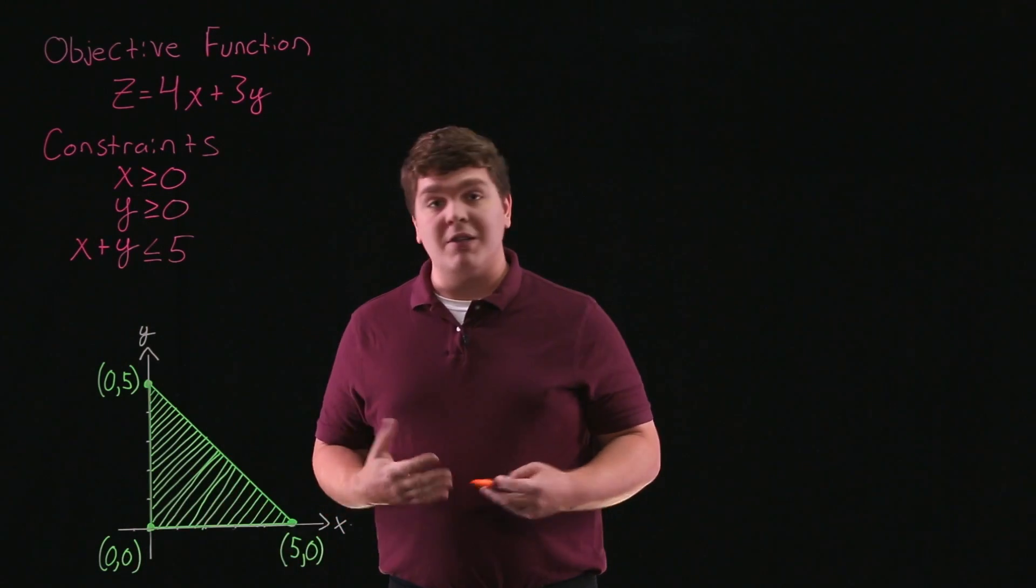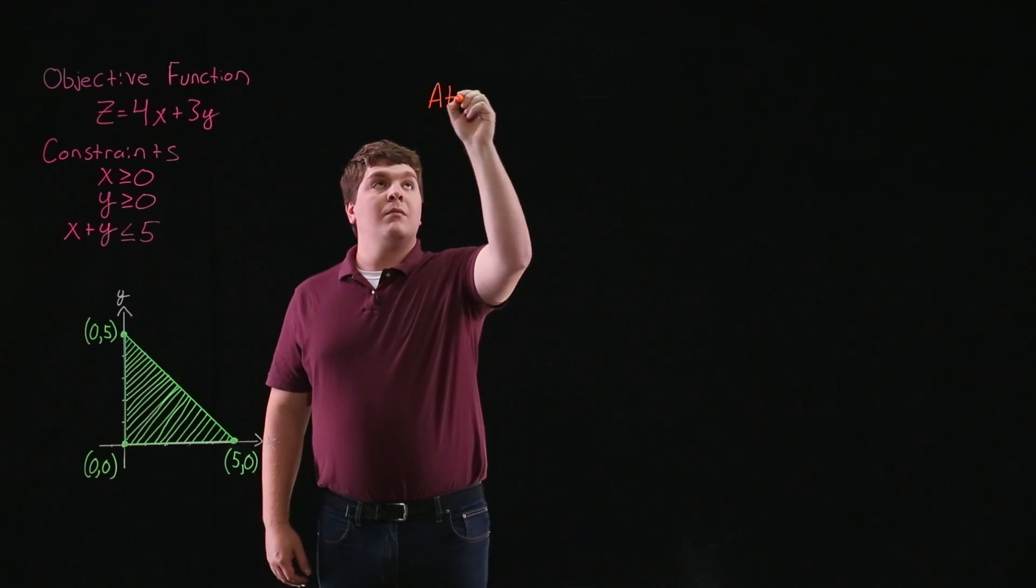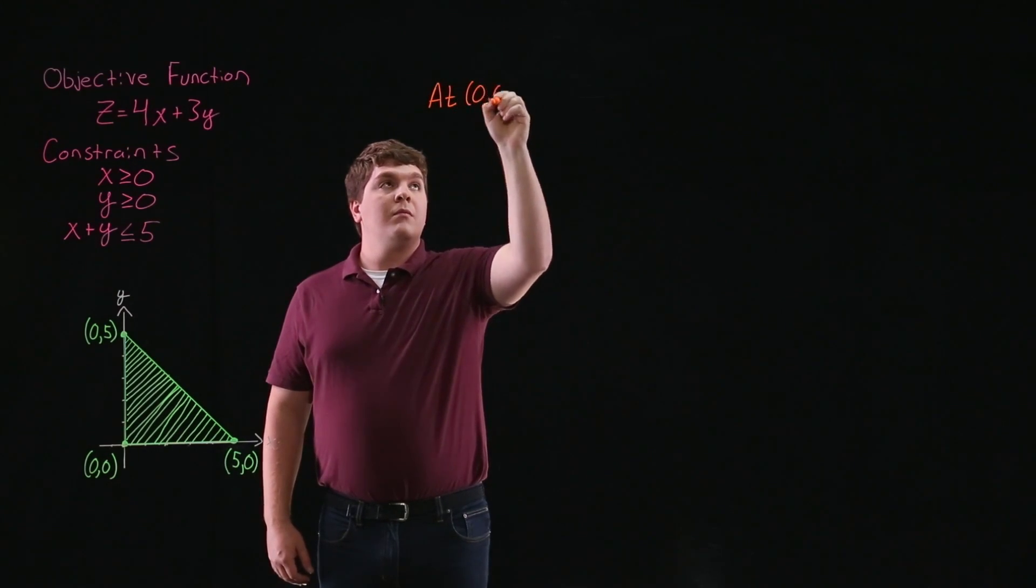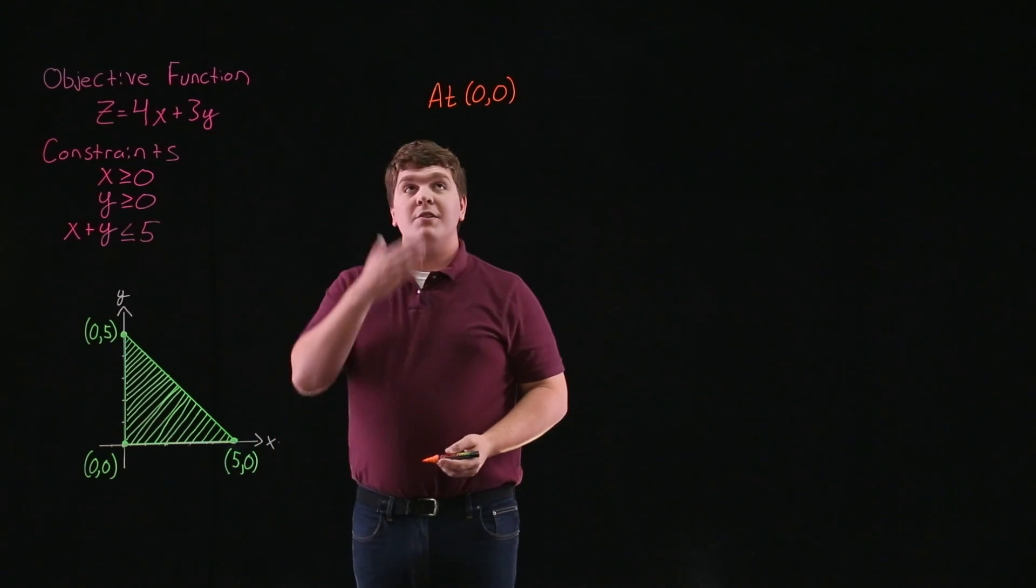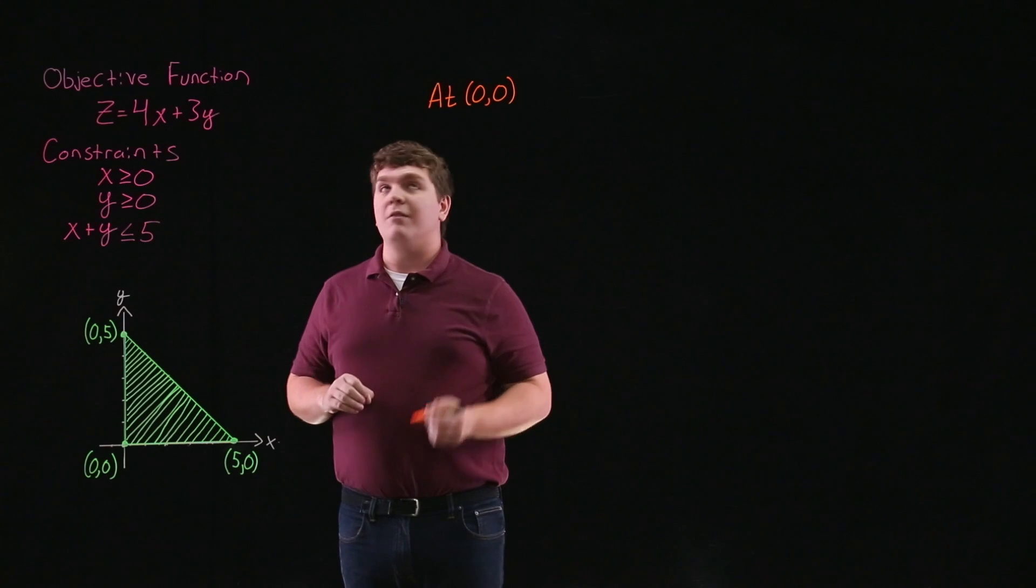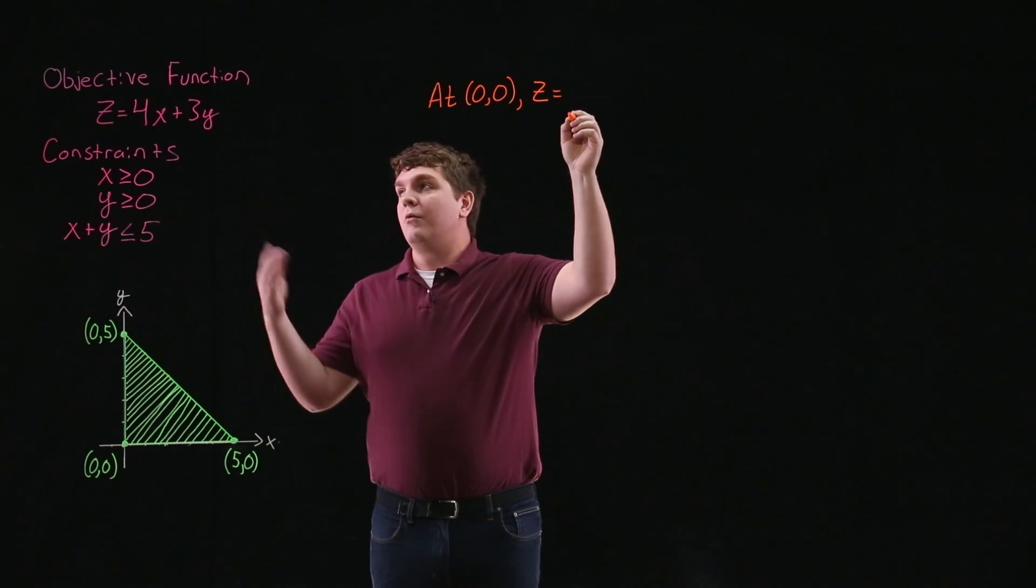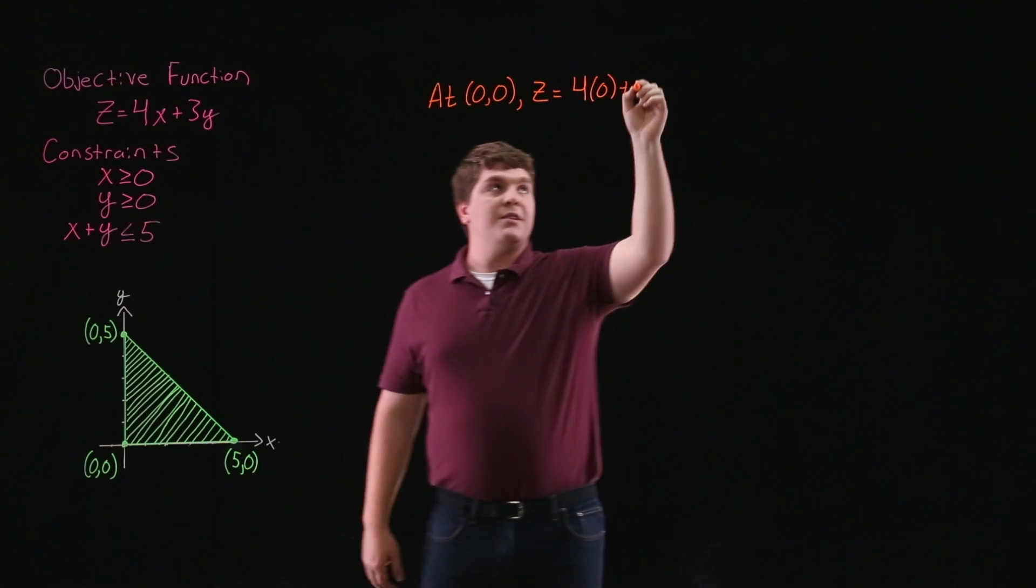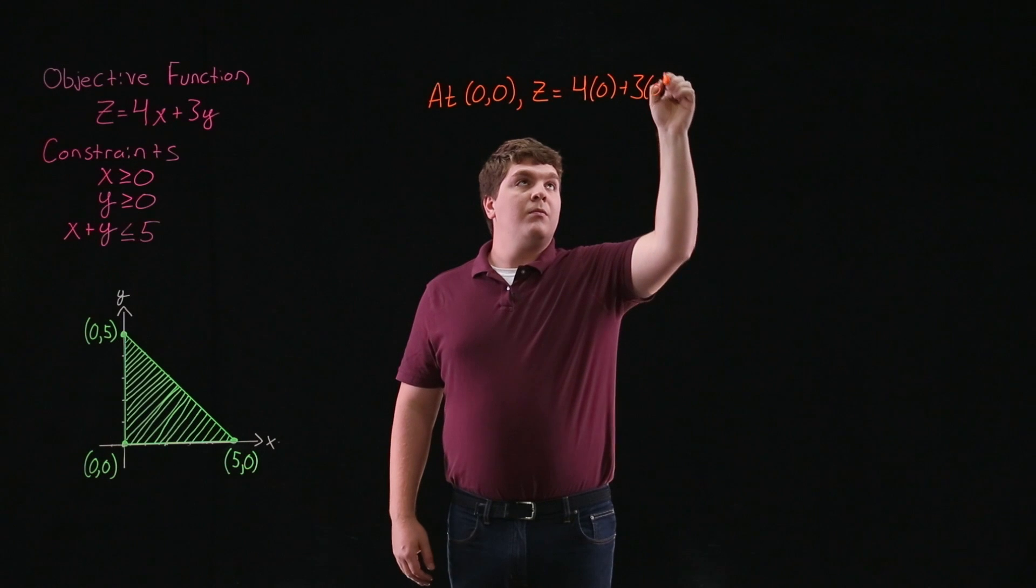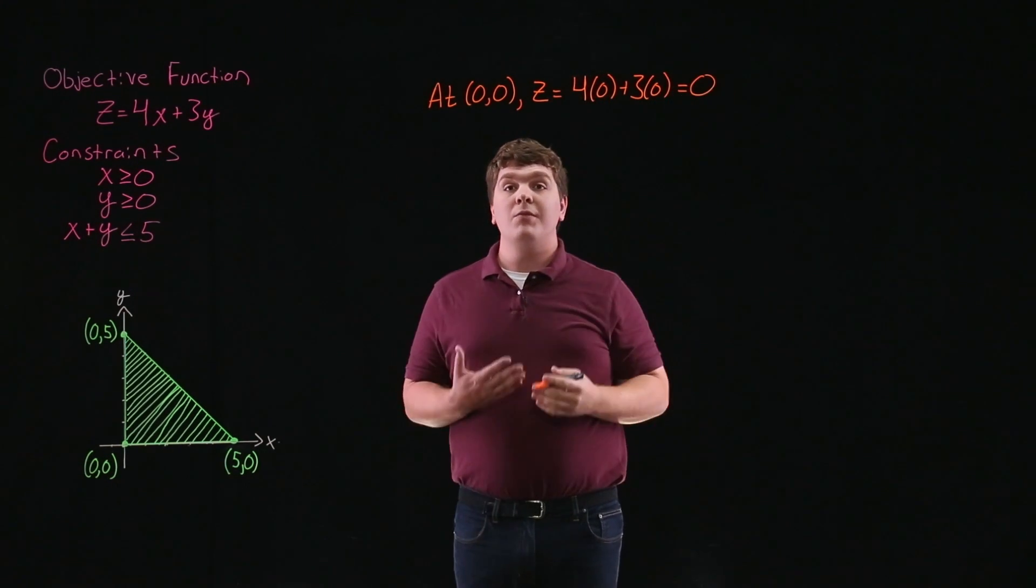So let's start with the origin 0, 0. When we substitute 0, 0 into our objective function, we have z is equal to 4 times 0 plus 3 times 0, which is 0 plus 0, which is just equal to 0.